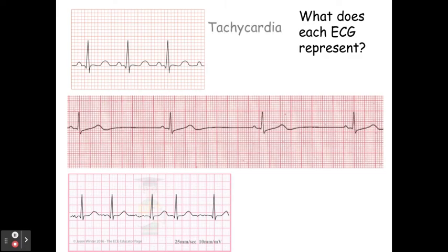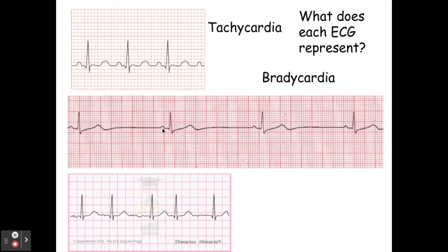The first heartbeat shown here is tachycardia — a fast heart rate. There's not much space between one heartbeat and the next, between the T wave and the P wave. The next one is bradycardia, which is a slow heart rate. You can see a long break between the QRS and the T wave and the P wave of the next heartbeat. You can also see that the QRSs here are a bit smaller than the tachycardia ones.